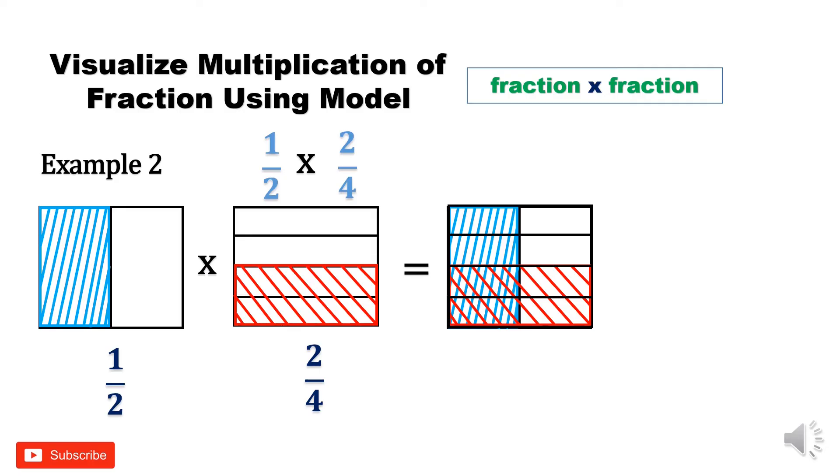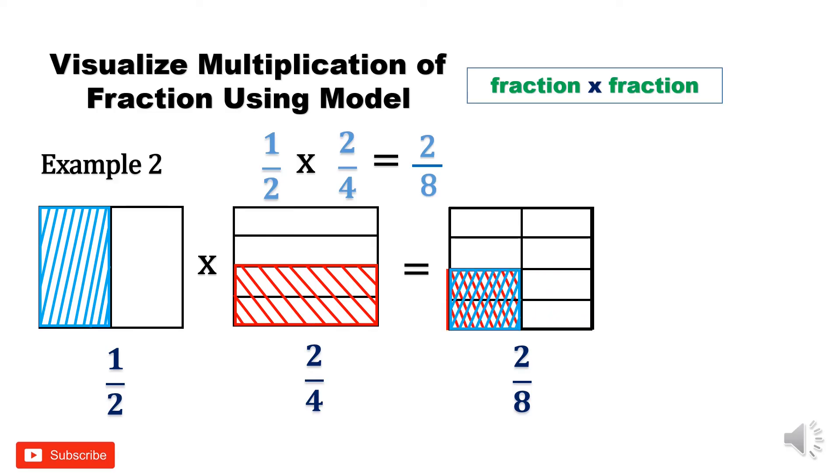Can you imagine what the answer is? Let us multiply 1/2 times 2/4. 1 times 2 equals 2, 2 times 4 equals 8. Can you imagine where 2/8 is? The 2 is the double shaded parts that have both red and blue. The 8 tells how many divisions you made. So it's 2/8. That is 2/8.